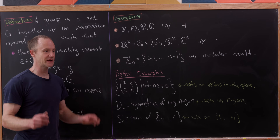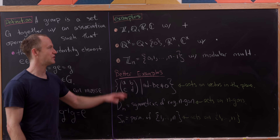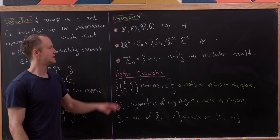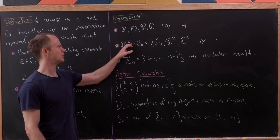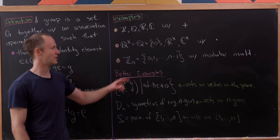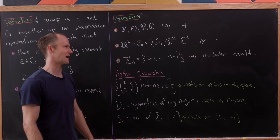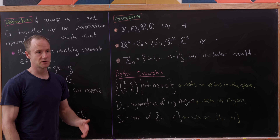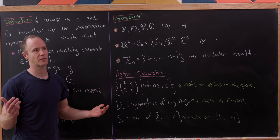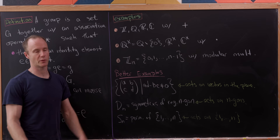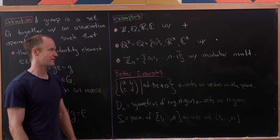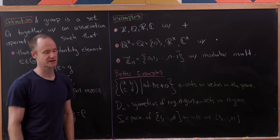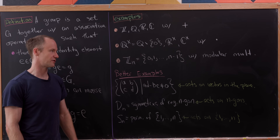You can make multiplicative versions of these groups if you throw away zero — we denote that Q times, meaning rational numbers minus zero. This doesn't work with the integers because there's no inverse for two within the integers — you'd need one half. Then there are the non-zero reals and non-zero complex numbers with multiplication.